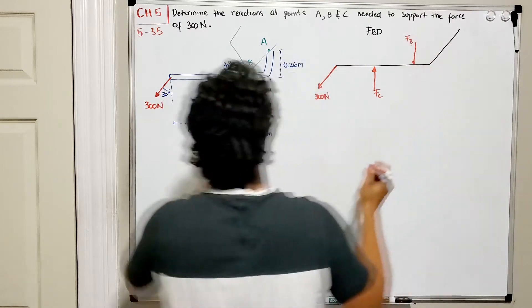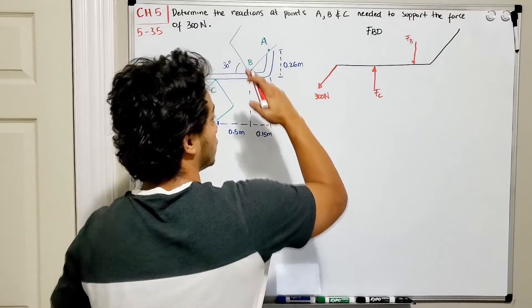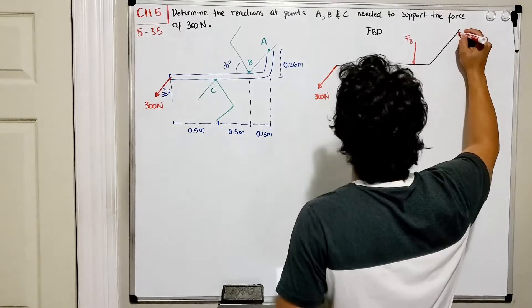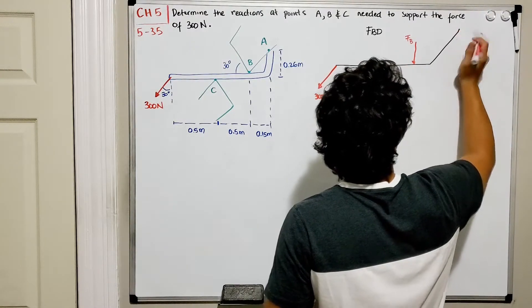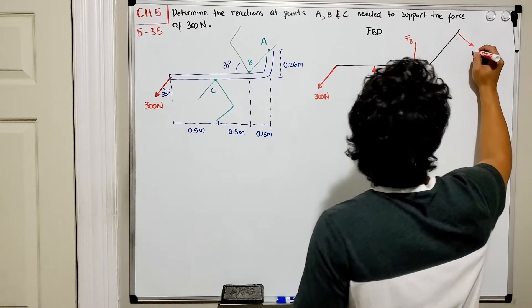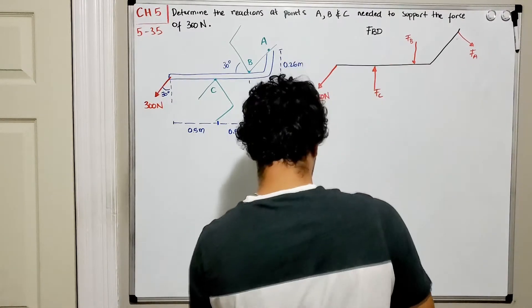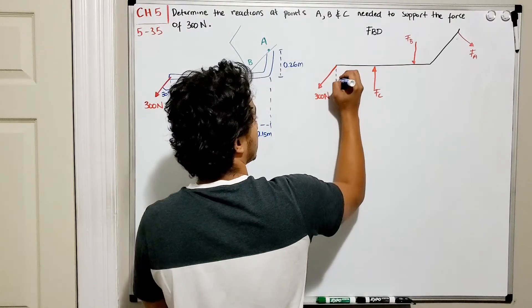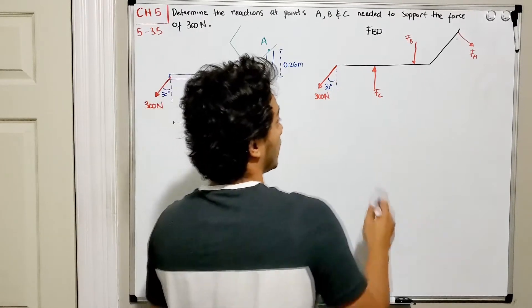At point A, we'll have a force going down and to the left, normal to that surface, and we'll call it FA. We know that this 300 N force makes a 30-degree angle with respect to the Y axis.